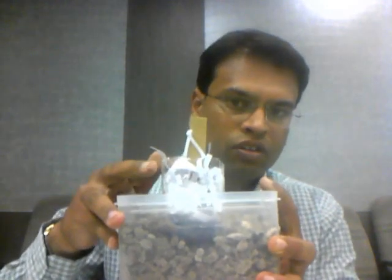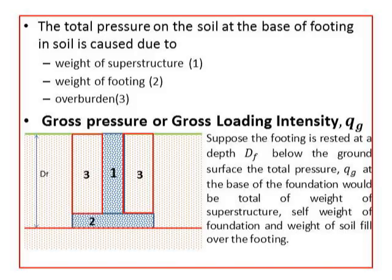Here is my foundation resting on the soil. So the loading or pressure intensity at the base of the footing is due to these three components. The total pressure on the soil at the base of the footing is due to: the weight of the superstructure, the weight of the footing, and the overburden.